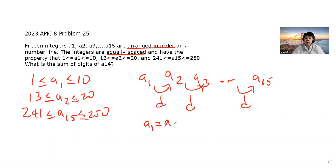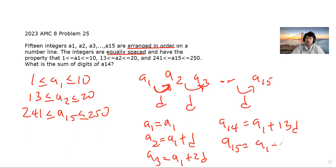A1 is just equal to A1. A2 is equal to A1 plus D, because A1, you skip D, and you get A2. A3 is equal to A1 plus 2D, because you skip 2Ds until you get to A3. After that, A4 is equal to A1 plus 3D, and so on. All the way to A14 is equal to A1 plus 13D, and A15 is equal to A1 plus 14D.